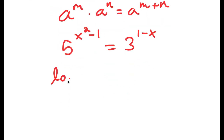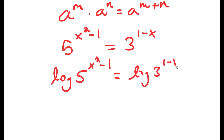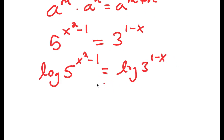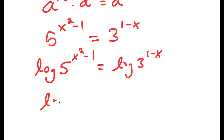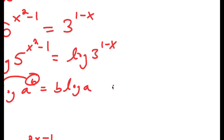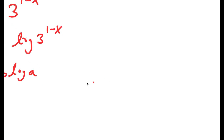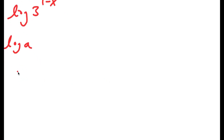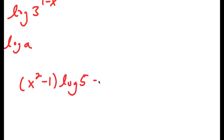Now, if I take the log on both sides, I get log of 5 to the power of x squared minus 1 is equal to log of 3 to the power of 1 minus x. And if I have something in the form log a to the power of b, I can move the exponent b to the front, so it equals b times log a. So I get x squared minus 1 times log 5 is equal to 1 minus x times log 3.